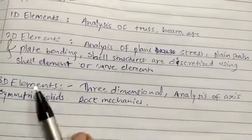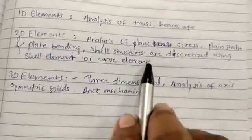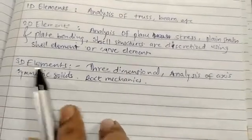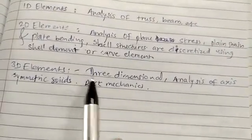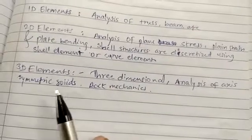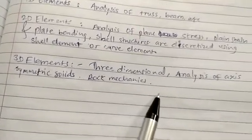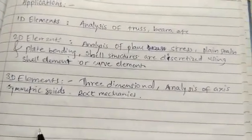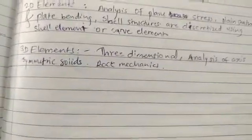Shells are discretized using the shell element or curve element. For 3D elements, they are used for three-dimensional analysis of axisymmetric solids, and can also be used for rock mechanics. These are the applications of the elements used in finite element analysis. We will see the shape function in the next video. Thank you.